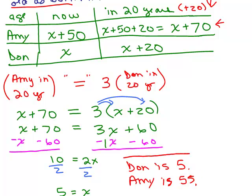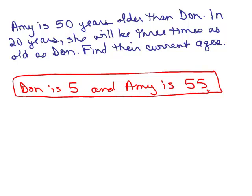By the way, notice Amy is not three times as old as Don right now. Because if Don's 5, three times as old would be 15. She's 55. How many times as old is she right now? She's actually 11 times as old. Just something to observe. So it looks like Don's 5 and Amy's 55, but we want to go back to the original words and make sure this all makes sense.